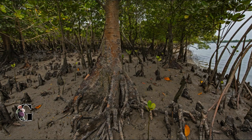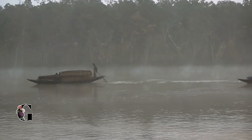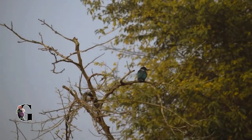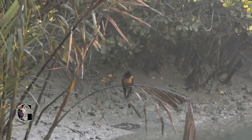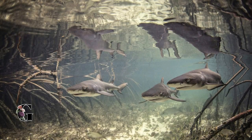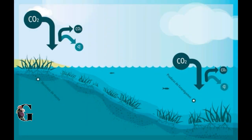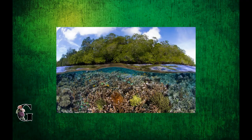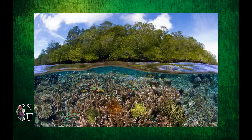Mangroves protect coastal areas from erosion, storm surge, and tsunamis. They are also effective in dissipating wave energy. A unique feature of the mangrove is that the root system provides a nursery environment to thousands of fish species, from a one-inch goby to a ten-foot shark.